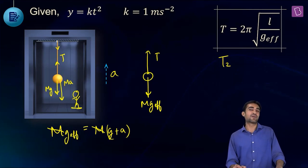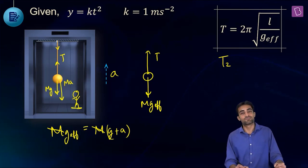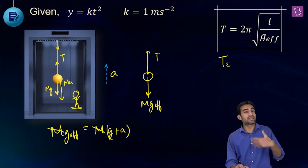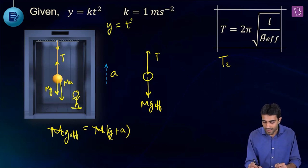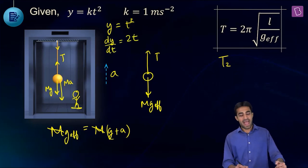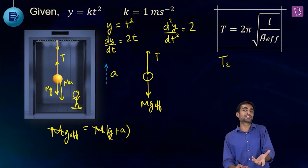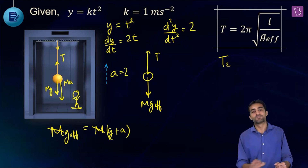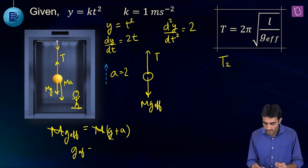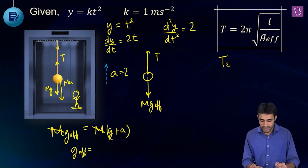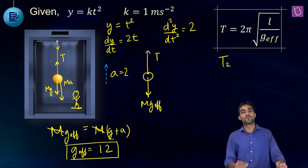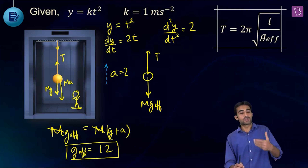We need to find the acceleration. Given y = kt² with k = 1, so y = t². Differentiating: dy/dt = 2t, and d²y/dt² = 2. So acceleration a = 2 m/s². Therefore G_effective = G + A = 10 + 2 = 12.